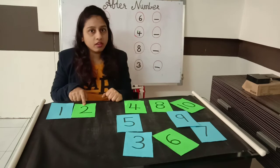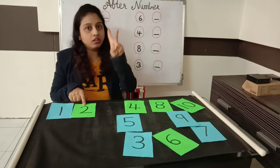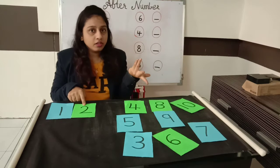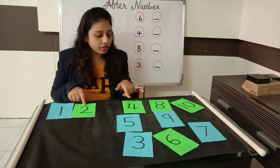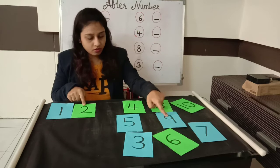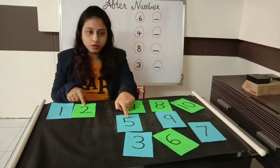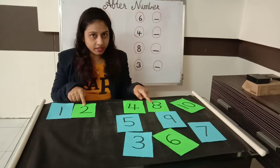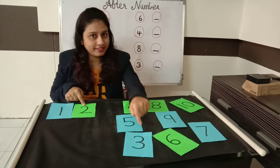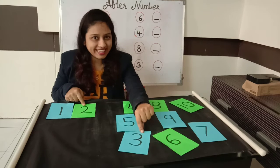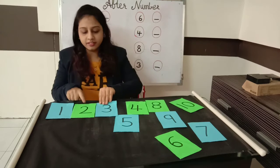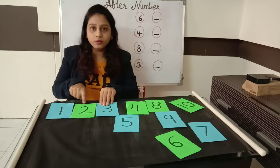2 after what? 1, 2, then what? 3. So, where is number 3? Help me. Is this 3? No. Is this 3? No. Is this 3? No. Is this number 3? No. Is this number 3? No. Is this number 3? Yes. So we will place it here — 1, 2, and 3.